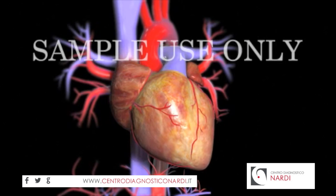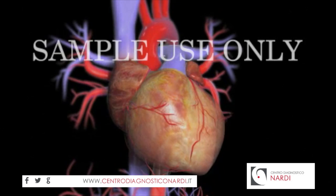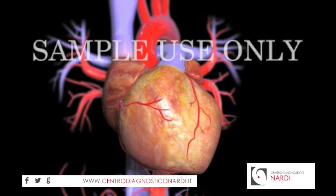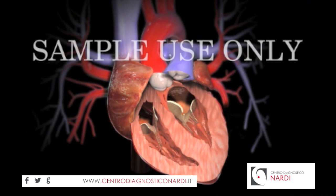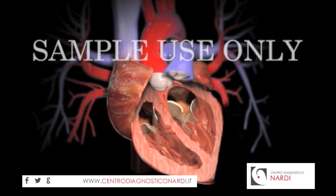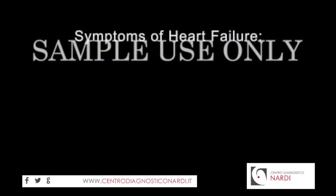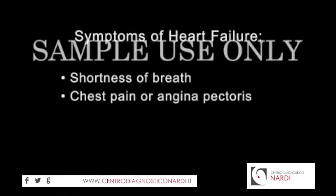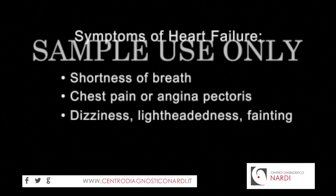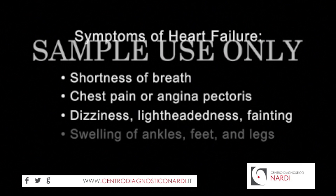After a period of time, a faulty aortic valve can cause the heart muscles to become enlarged and weakened. Depending on the nature of the valve's defect, the walls of the left ventricle may become abnormally thick or thin, and the problem can eventually affect the right side of the heart as well. Patients with this condition, known as heart failure, may experience shortness of breath, chest pain or angina pectoris, dizziness, lightheadedness, fainting, swelling of the ankles, feet and legs, and fatigue.